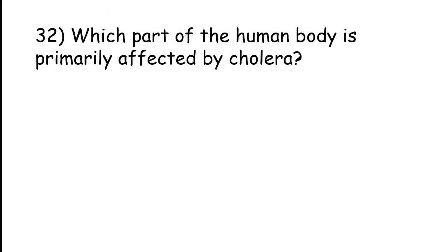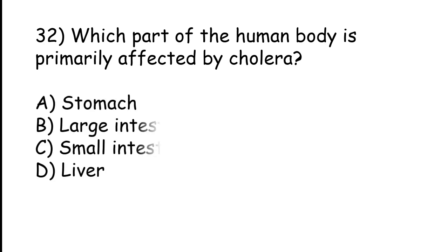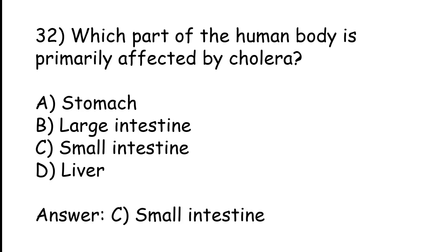Which part of the human body is primarily affected by cholera? Stomach, large intestine, small intestine, liver. The correct answer is option C, Small intestine.